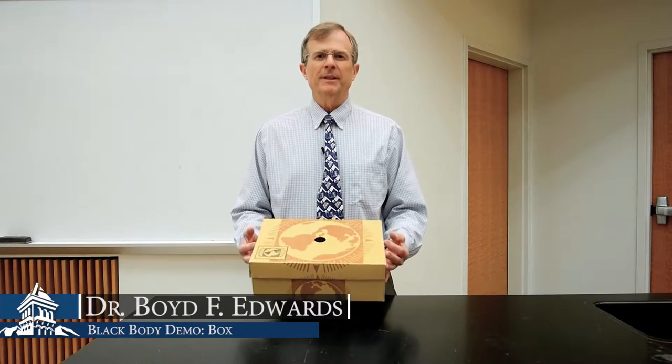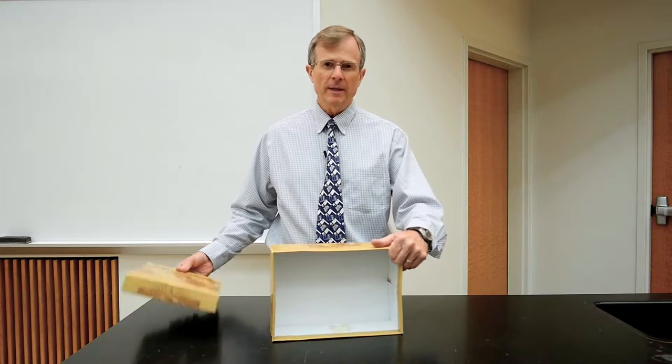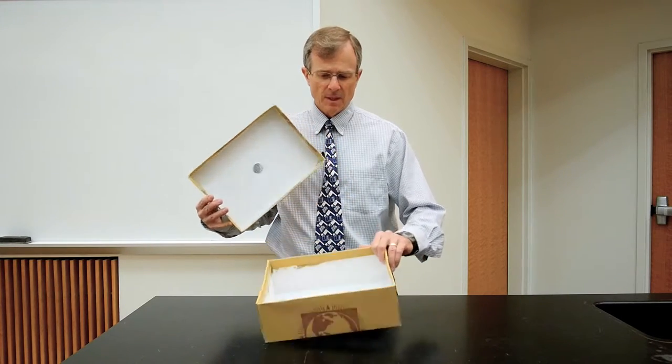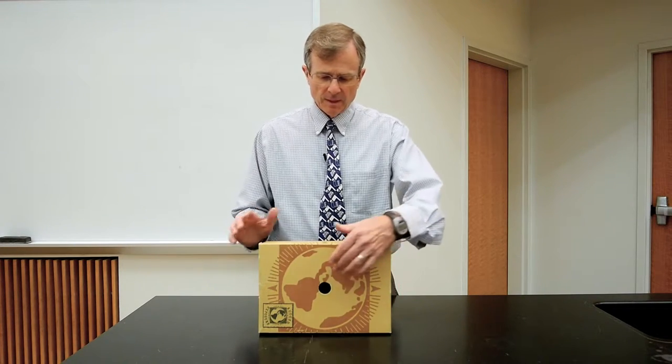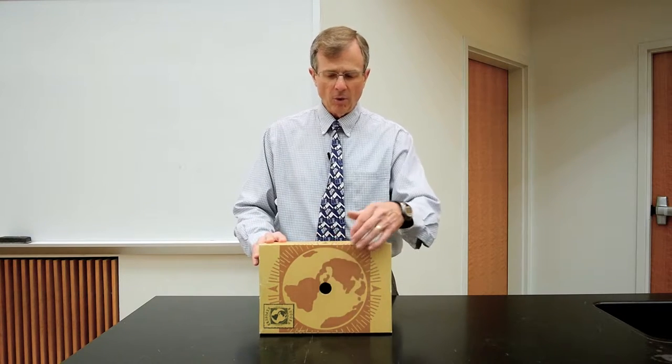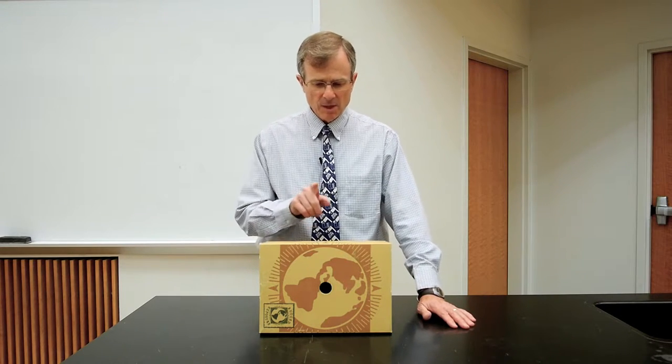This is an example of a black body, so-called. It's not black — it has a white interior. But it serves as a good example of a black body for the following reason: light that comes through this hole is reflected around inside of the box and has a hard time getting back out before it's reflected several times.